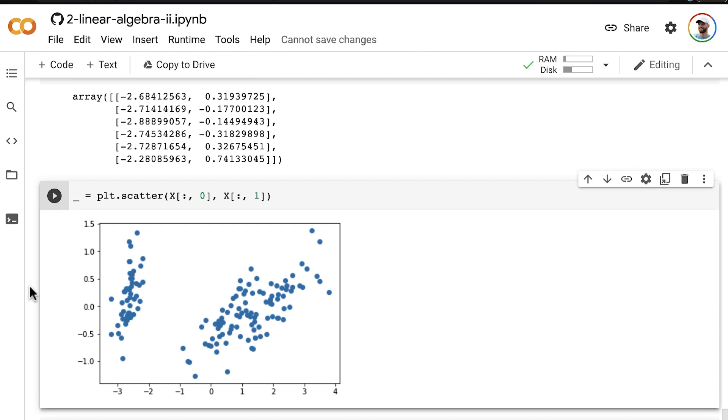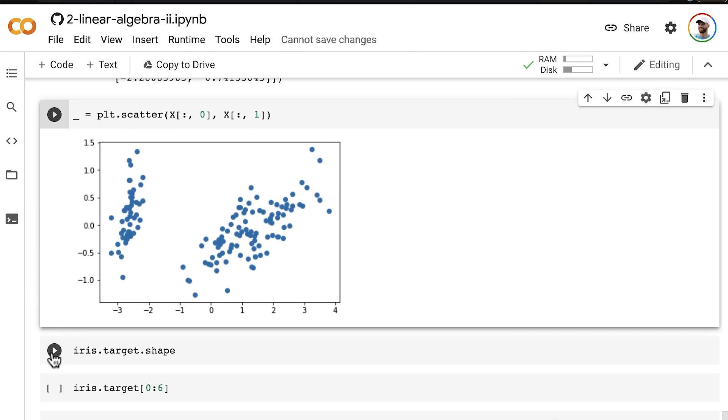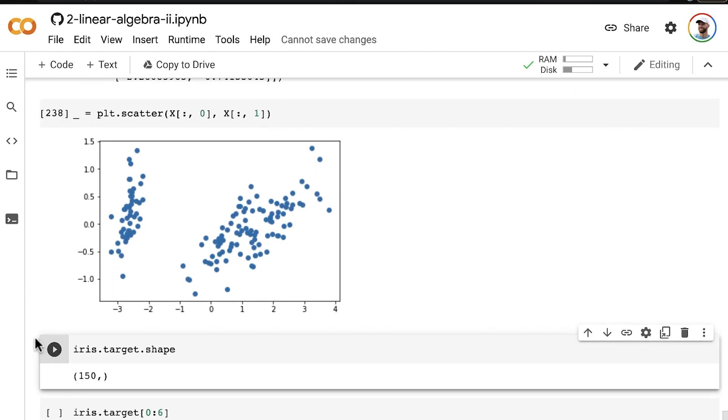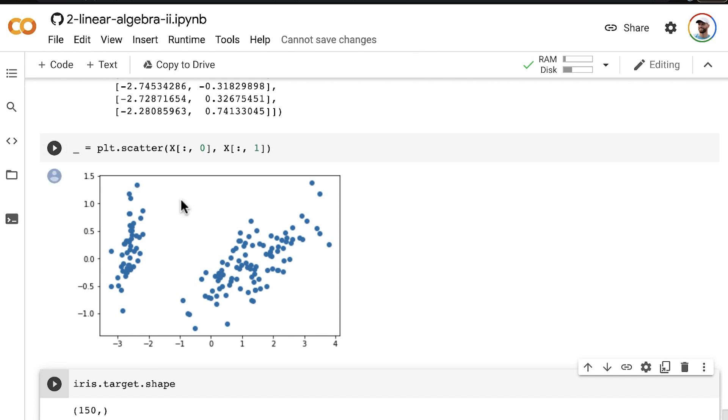Now, as it happens, for these iris data, we actually do have labels. So up until this point, we've been considering our data unlabeled. So we just have features, but we don't have outcomes that we could predict with those features.